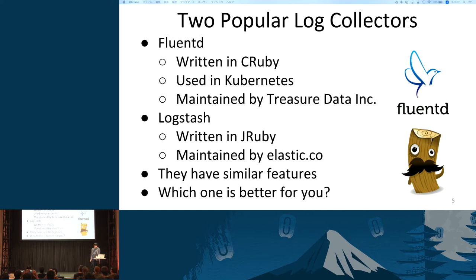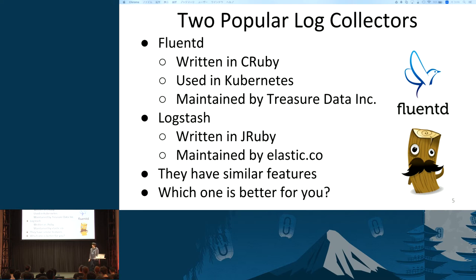Fluentd is one of the log collectors. It is written in CRuby. You might already know that Google adopted Fluentd as a standard log collector in Kubernetes. Fluentd is maintained by Treasure Data Inc., the company providing analytics infrastructure as a service. Logstash is another implementation of log collectors. It's written in JRuby and maintained by Elastic Co., the company developing Elasticsearch.